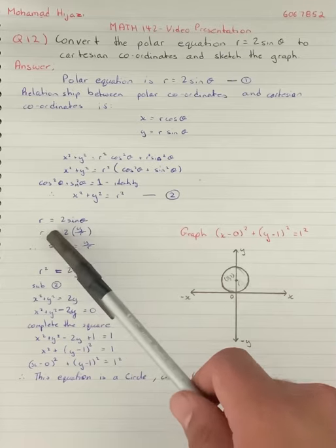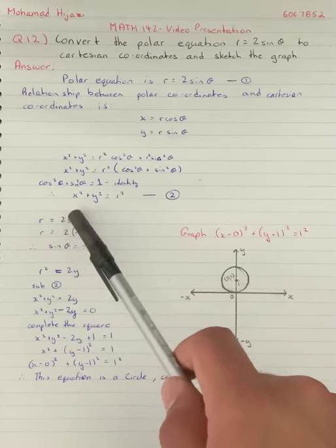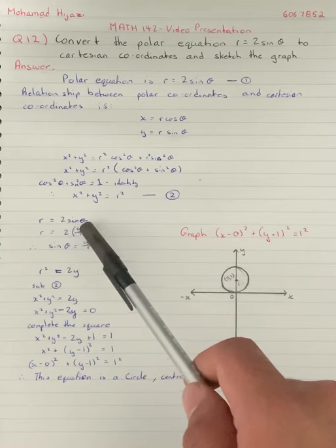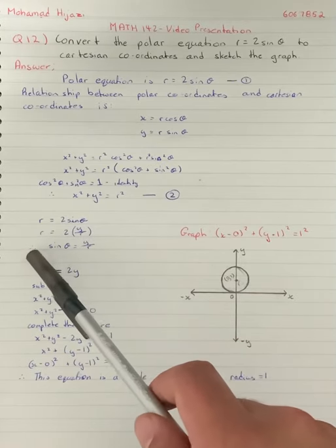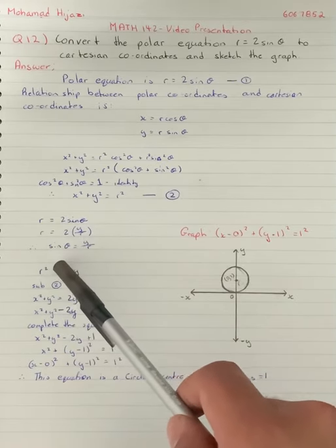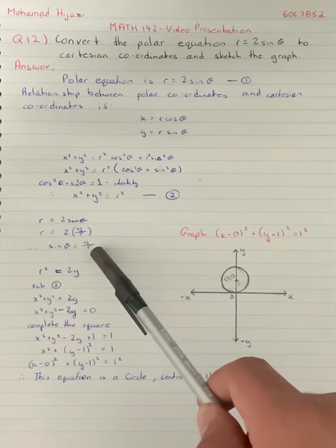Now, looking at r = 2sin(θ), and since y = r·sin(θ), we can conclude that sin(θ) = y/r.